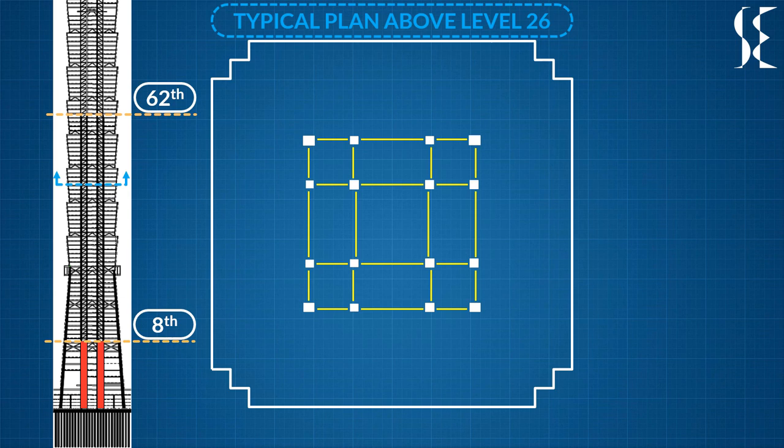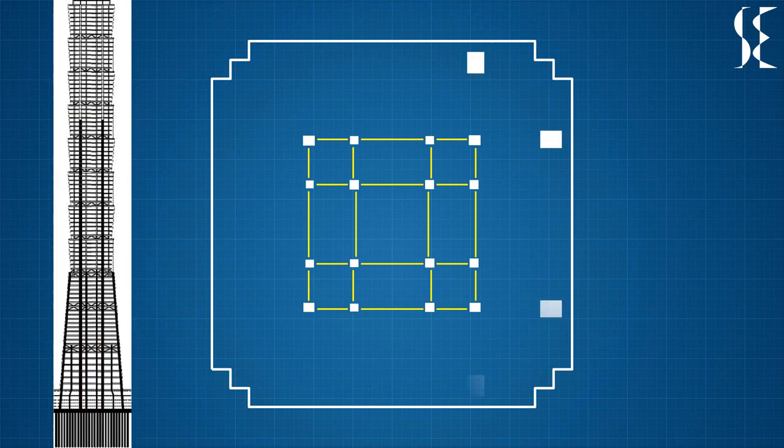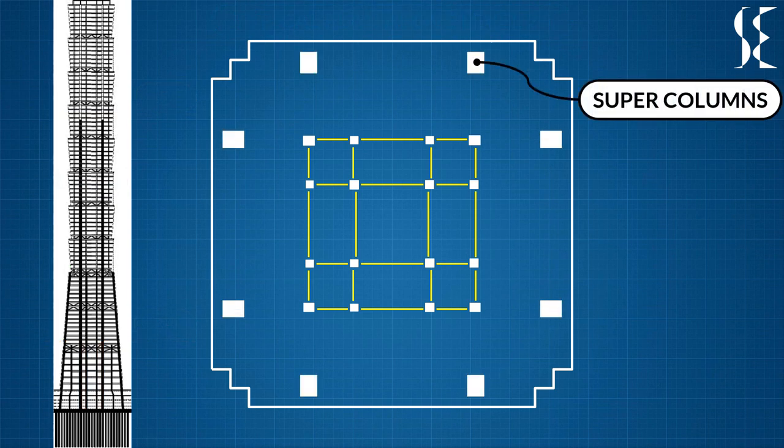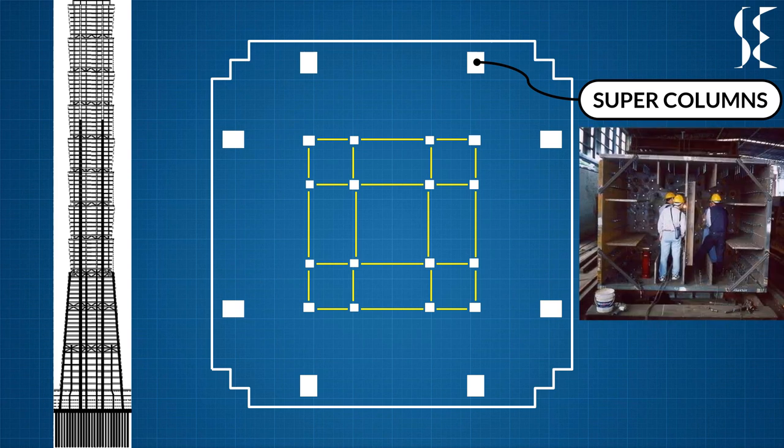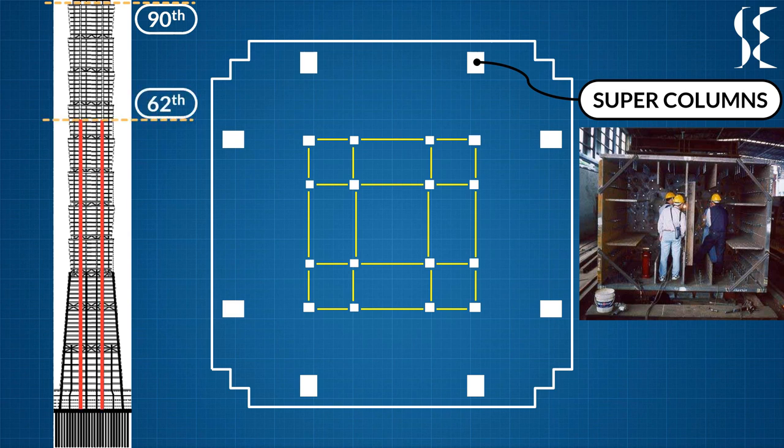The building has 8 super columns or mega columns which are steel boxes filled with high strength concrete. They are present on perimeter of the building, 2 on each face. These super columns were built up to level 90 of the tower. They were filled with concrete of strength 69 MPa from bottom of the basement till level 62. These columns controlled drift as large portion of drift is created at lower stories due to overturning rotations.